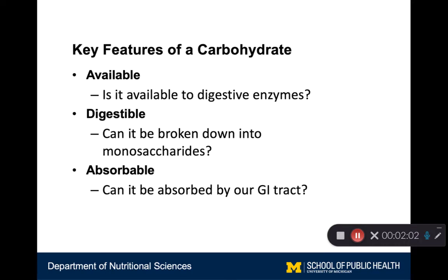As we go through this carbohydrate unit, keep in mind the kinds of features that are important for how our body processes carbohydrates. First, is it available? How accessible is the carbohydrate to its digestive enzymes — is there an outer shell that needs to be broken through, or is it very easily accessible? The second question is how digestible is the carbohydrate — can its glycosidic linkages be broken, how easily can they be broken, and how accessible are the monosaccharides? And then the third stage is how absorbable are those monosaccharides? The only absorbable unit of a carbohydrate is a monosaccharide, and only certain monosaccharides are efficiently absorbed by our gastrointestinal tract.